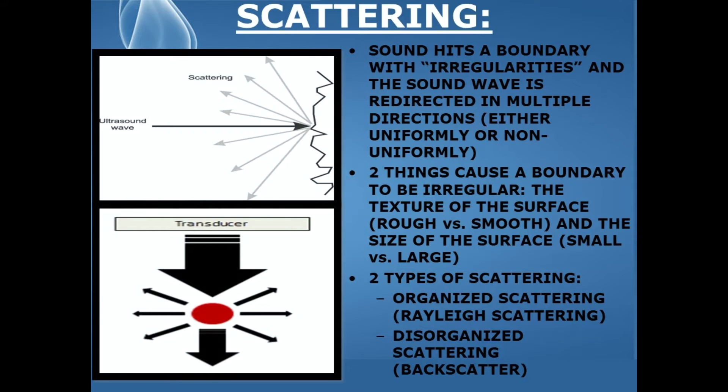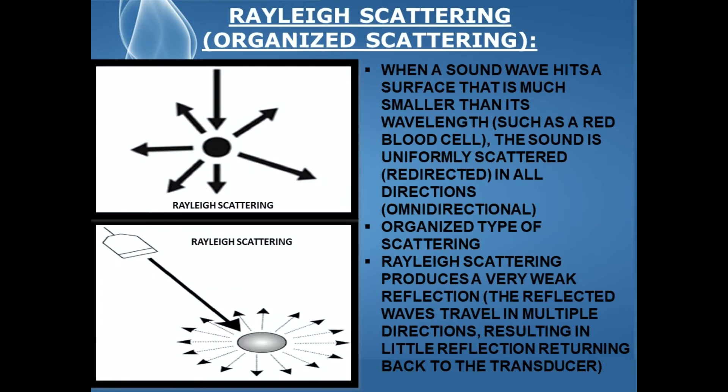There are two types of ultrasound scattering: organized scattering, also known as Rayleigh scattering, and disorganized scattering, also known as backscatter.